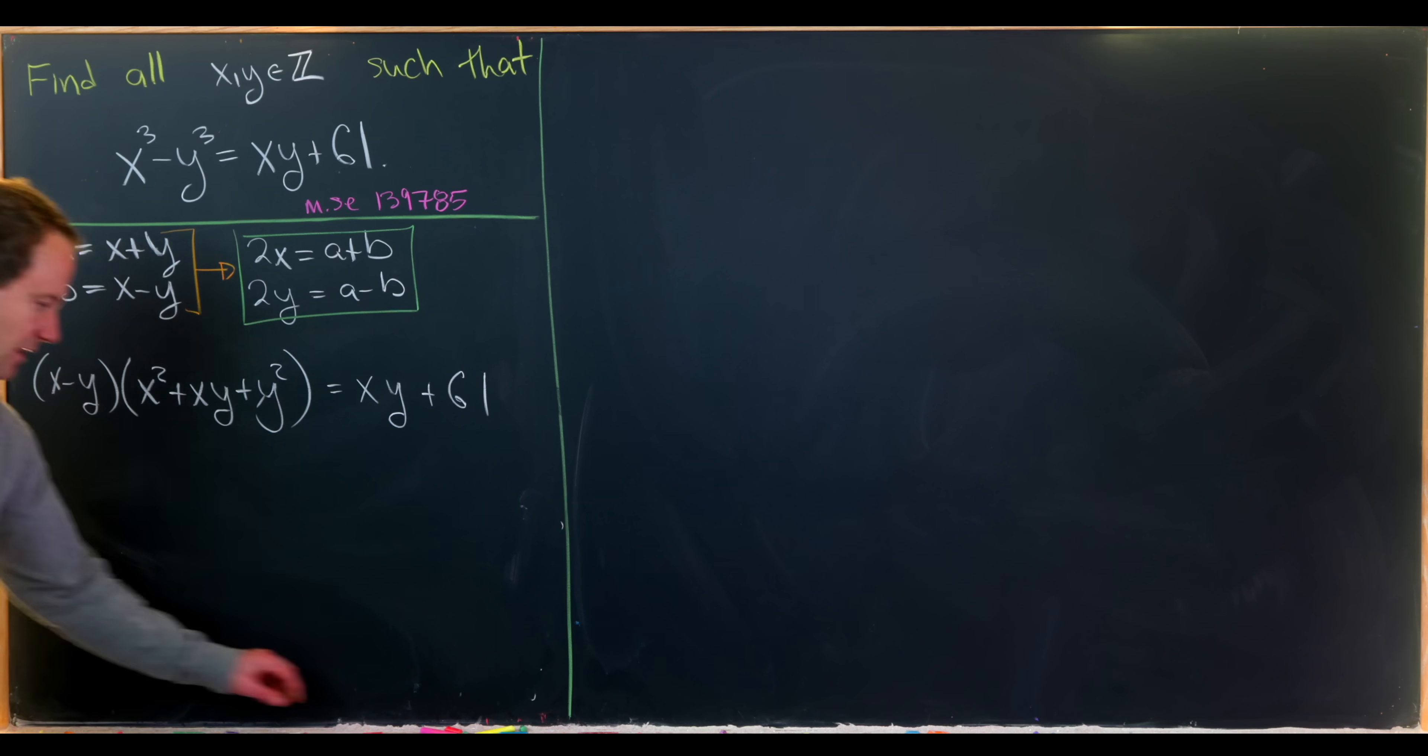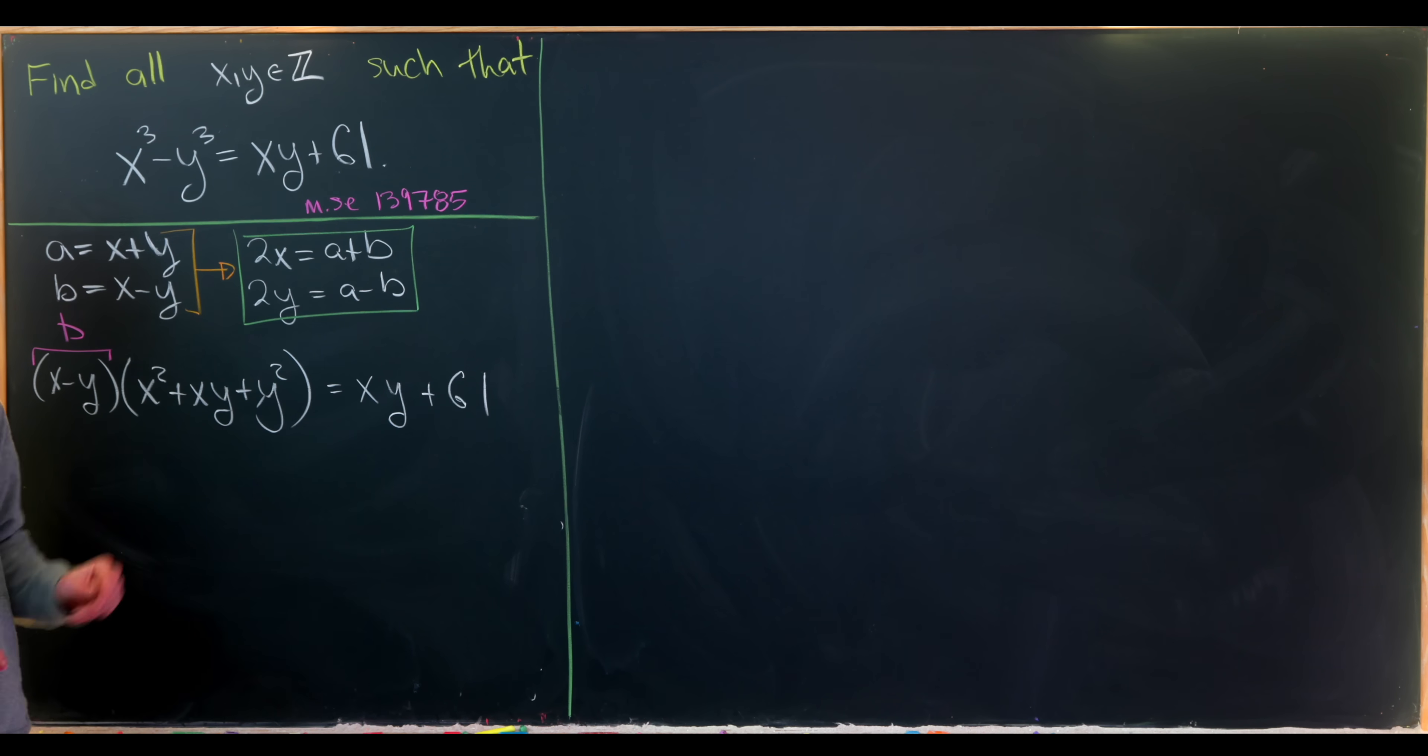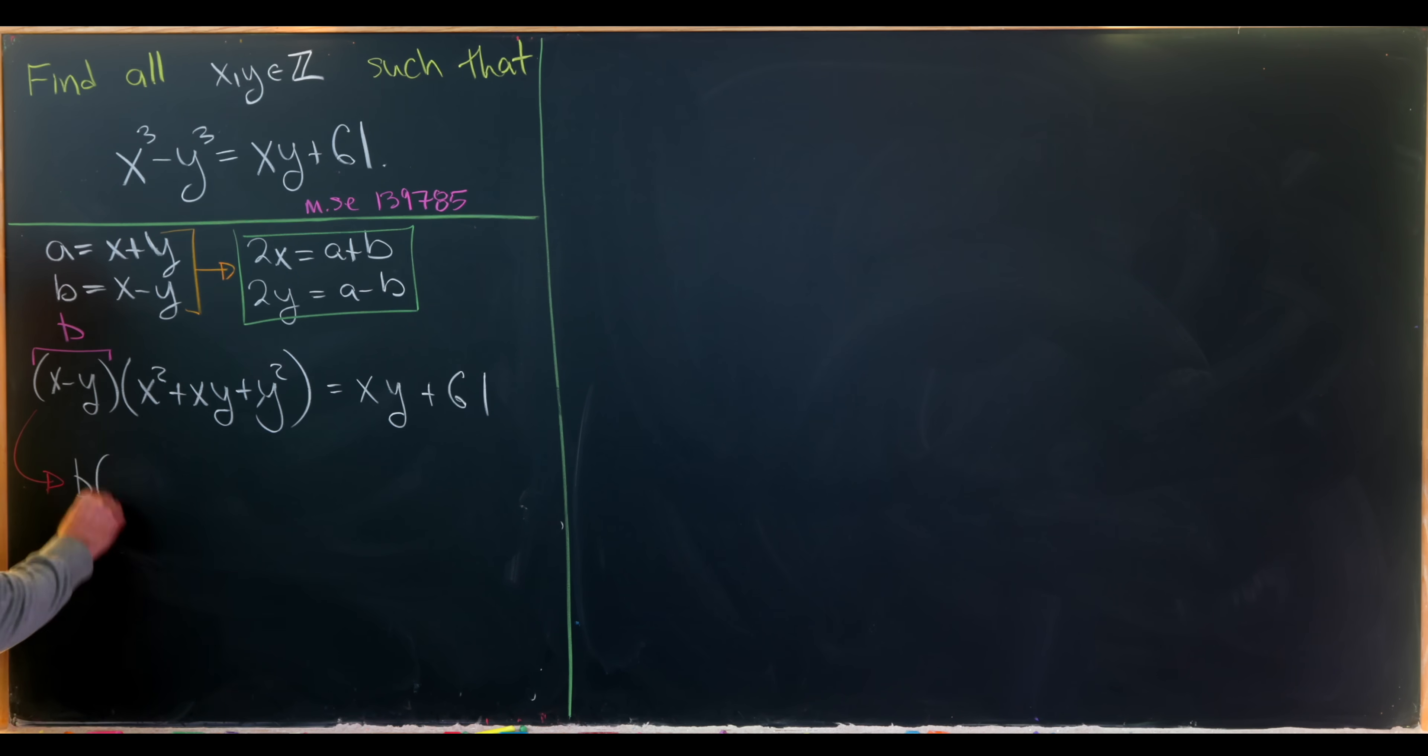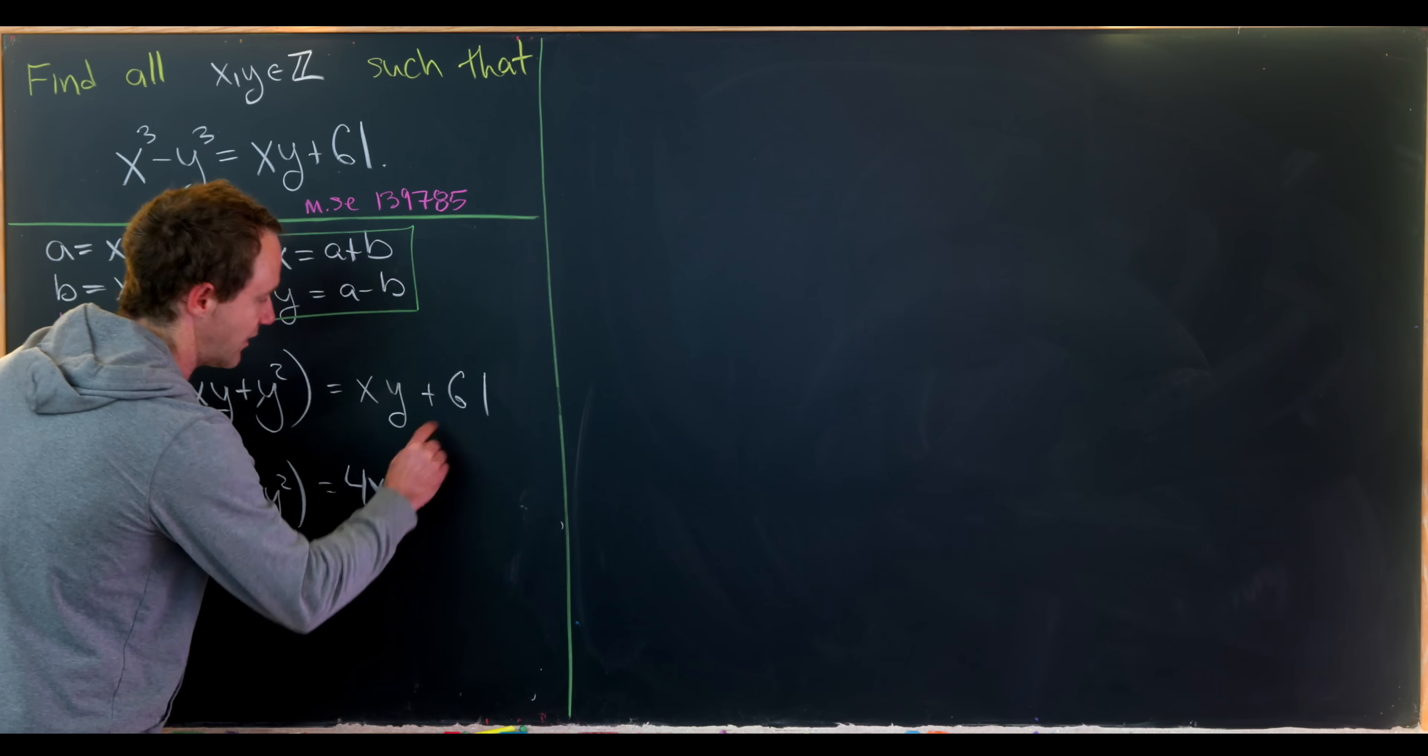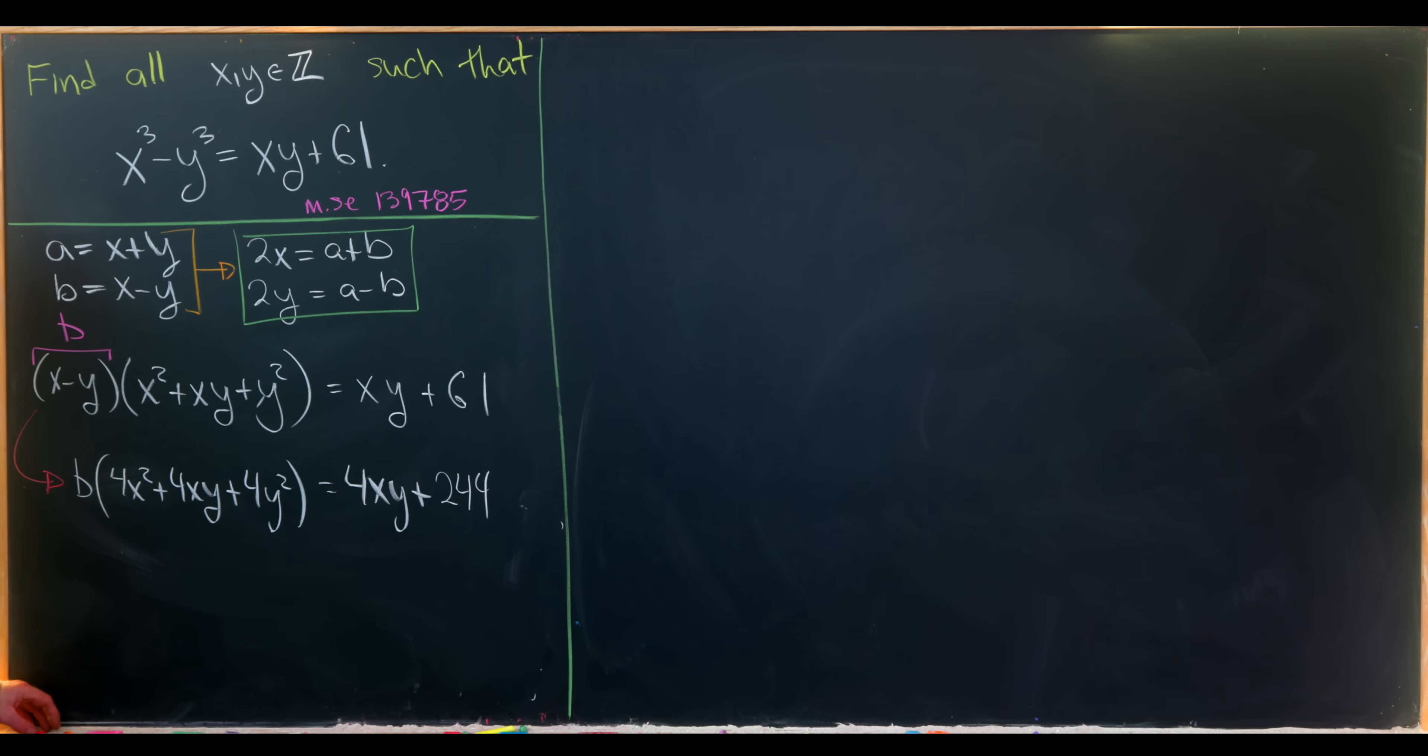Now let's notice that this term right here is ab and then everything else is quadratic in x and y. We've got an x squared, an xy, a y squared, and so on. In order to stay inside of the integers I'd like to multiply by 4 so I can write everything in terms of 2x and 2y. Multiplying everything by 4 we'll get b times 4x squared plus 4xy plus 4y squared equals 4xy plus 244.